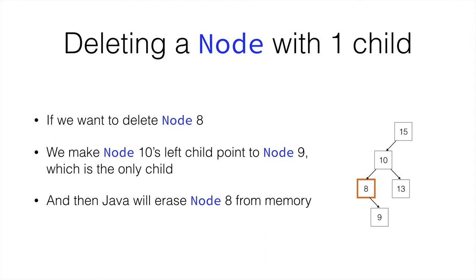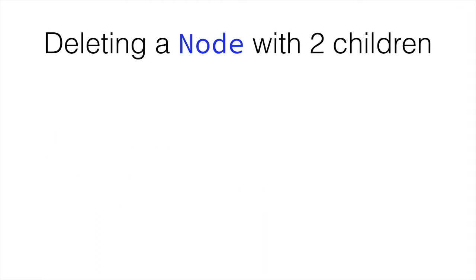So this is how that would be done. And finally deleting a node with two children. This is the most complicated of the options. Let's say we want to delete node 10. We have two choices.